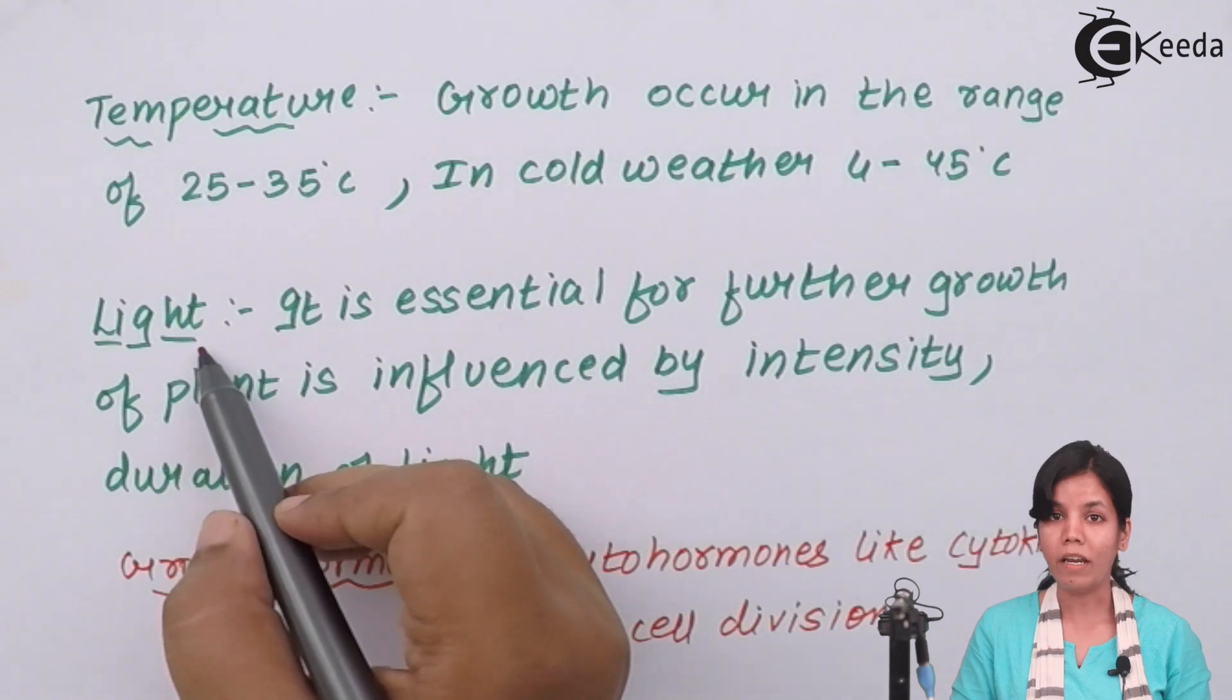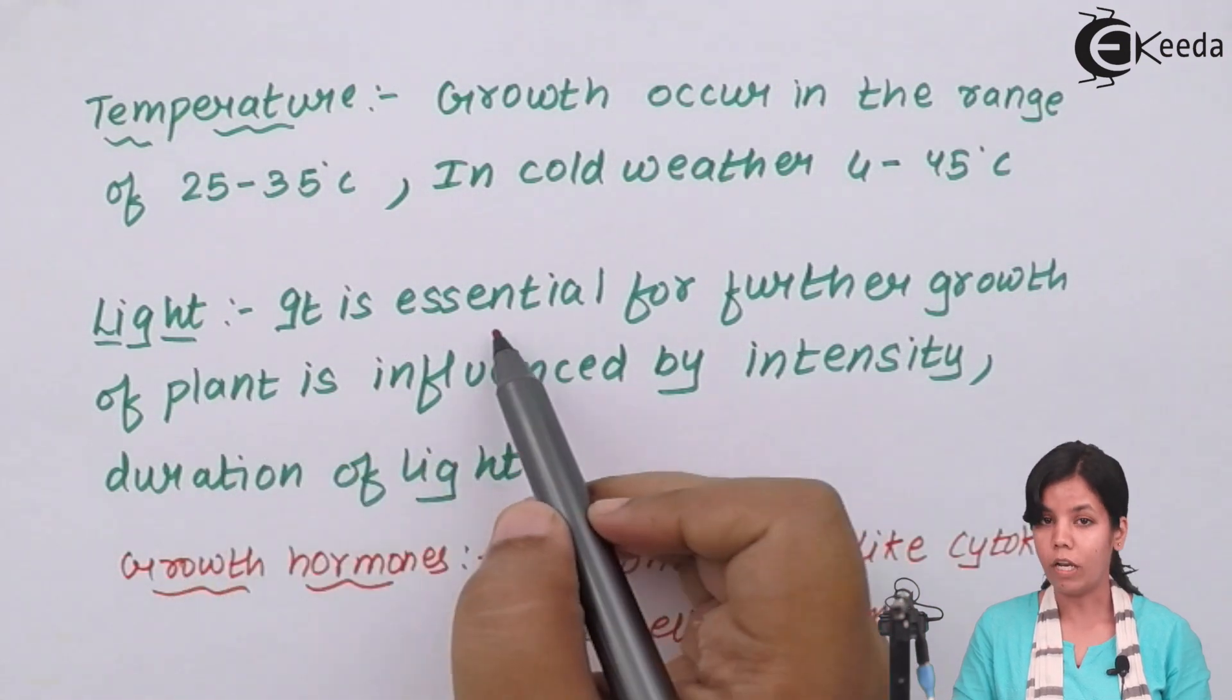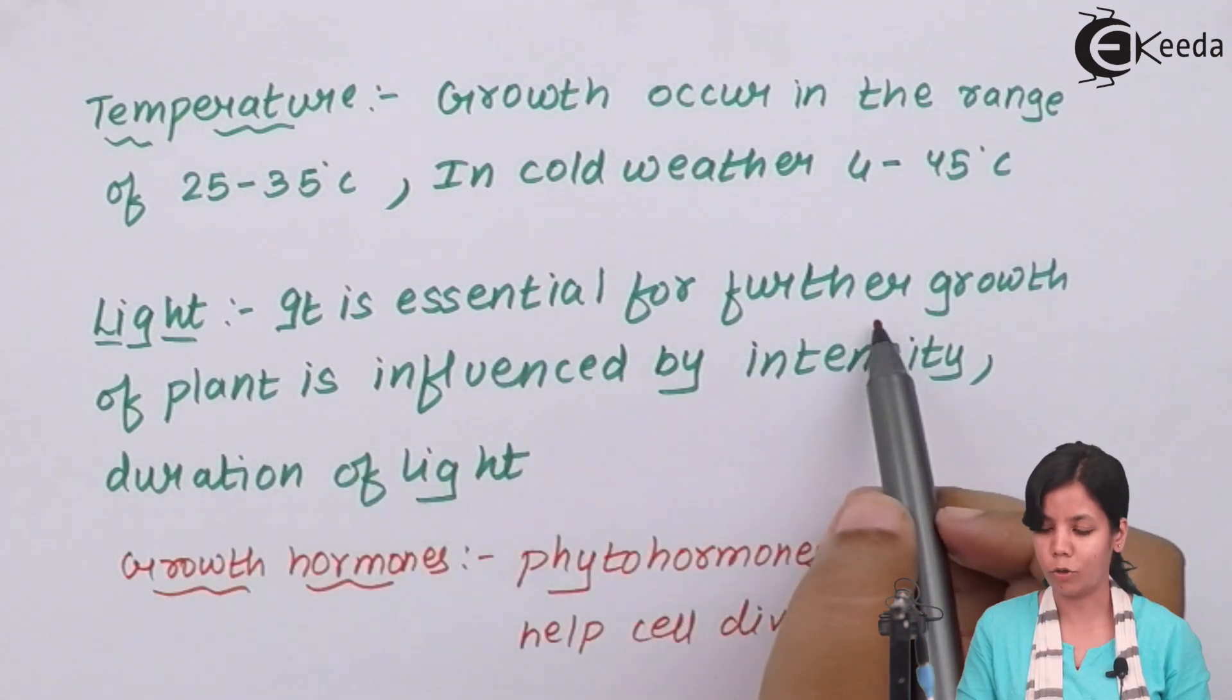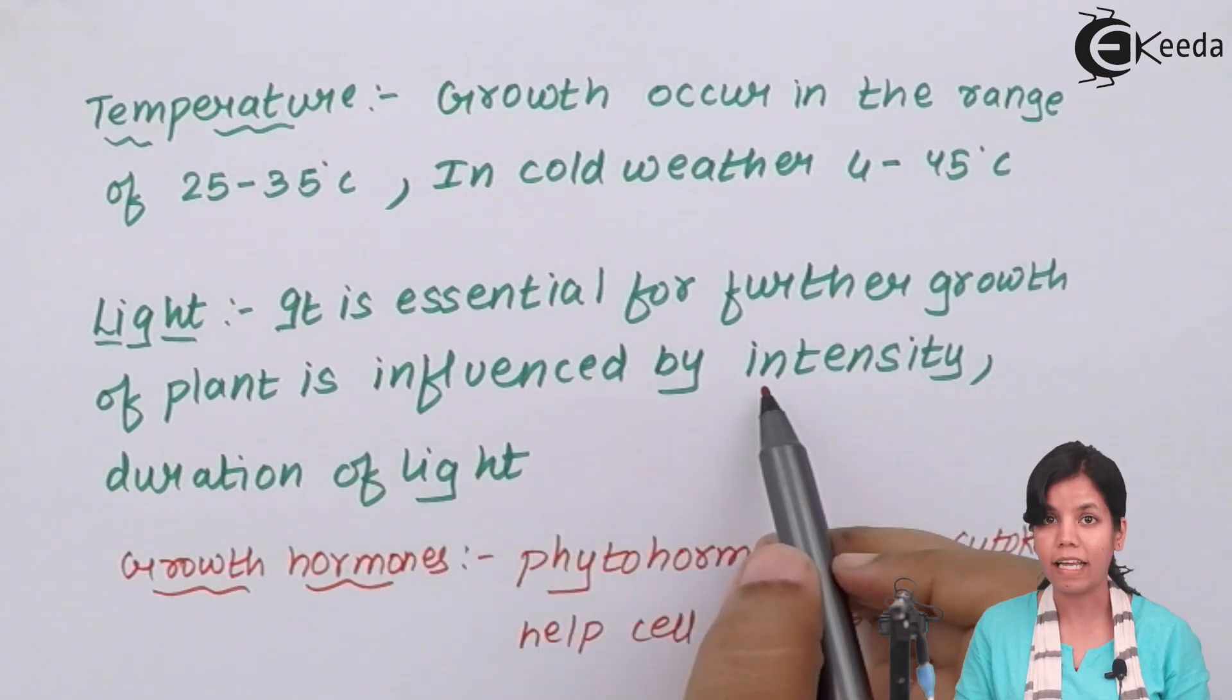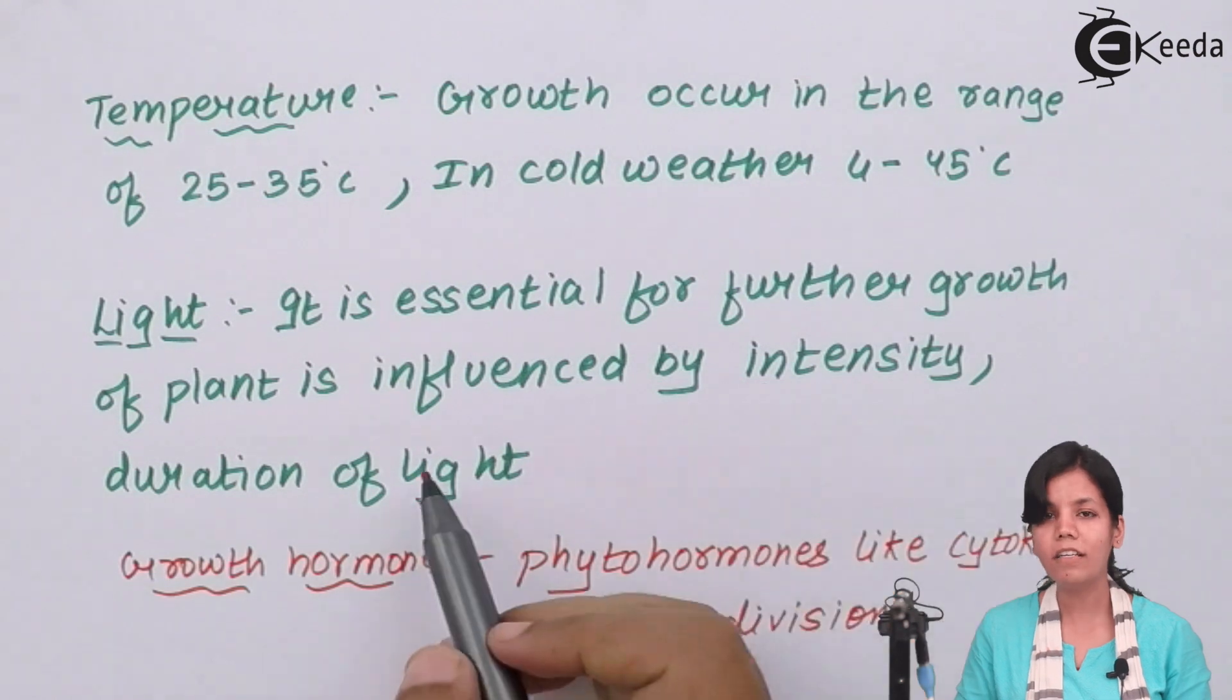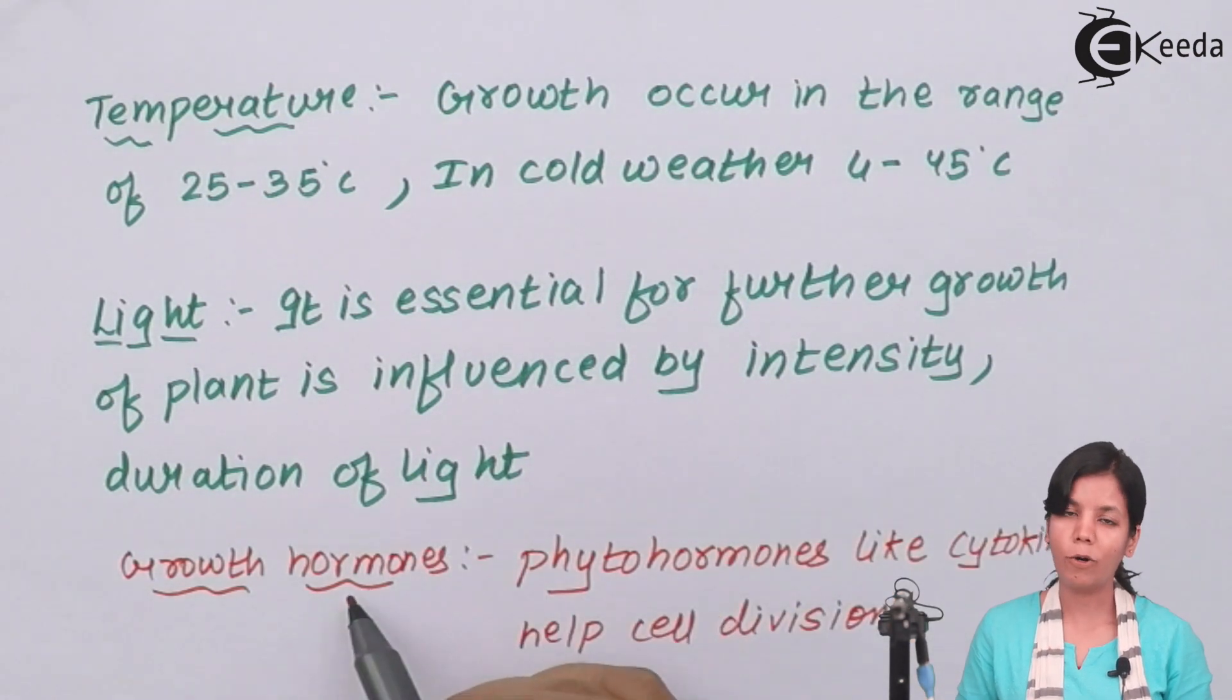Light: now when you keep a plant in light it grows faster, an experiment which you have studied in lower classes. So light is essential for further growth of the plant and plant growth is influenced by intensity, that is amount of light that you put and the duration of light that you keep the plant in.